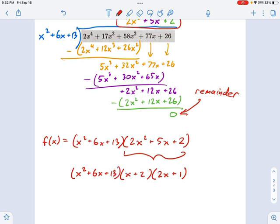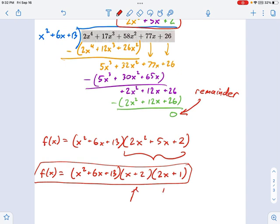And what I have here is now fully factored in terms of linear factors. That's these guys. Those are my linear factors. And my irreducible quadratic right here. That's what I was going for. So this is your fully factored form.